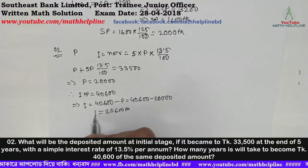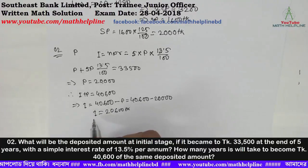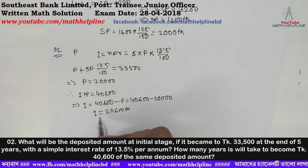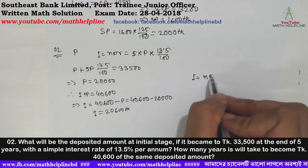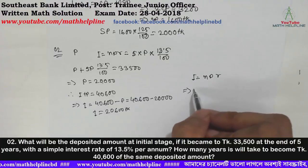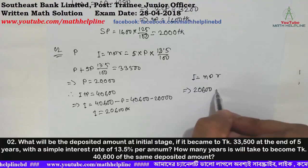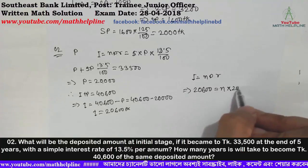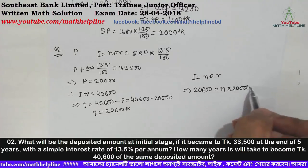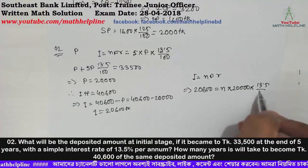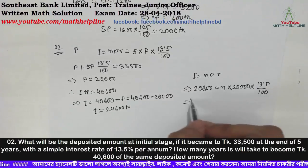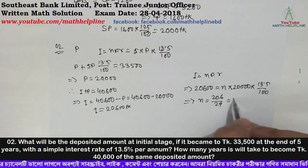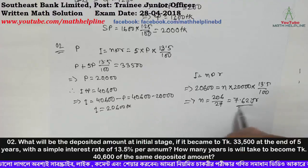Now we calculate this interest. Interest equals P times r times n. Our principal amount was taka 5,000, rate of interest was 13.5 by 100. Solving for n, we get n equals 206 by 27, which equals 7.62 years — approximately 7.62 years.